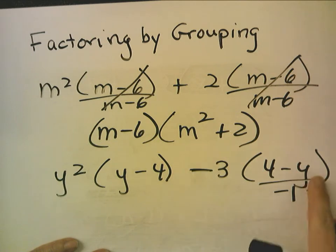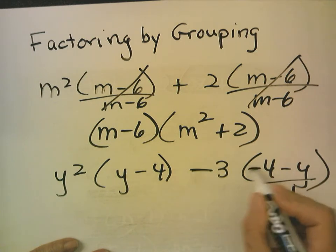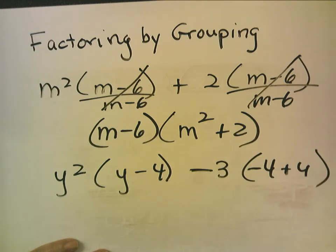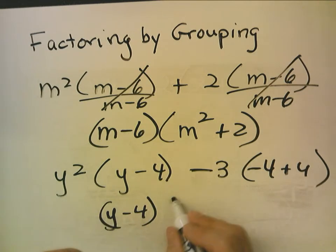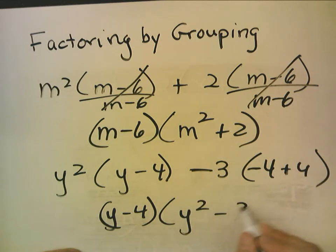I'd make this negative 3, this would become negative 4, this would become positive 3, and now I notice y minus 4 is my common term, and I'm left with y squared minus 3.